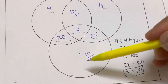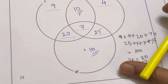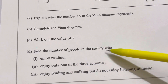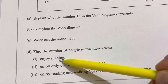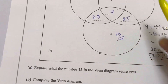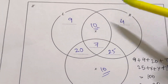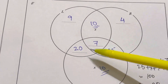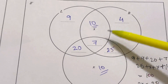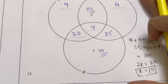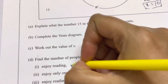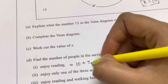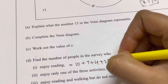Question d asks: find the number of people in the survey who enjoy reading. The people who enjoy reading include all regions that overlap with reading: 10 + 7 + 4 + 25.